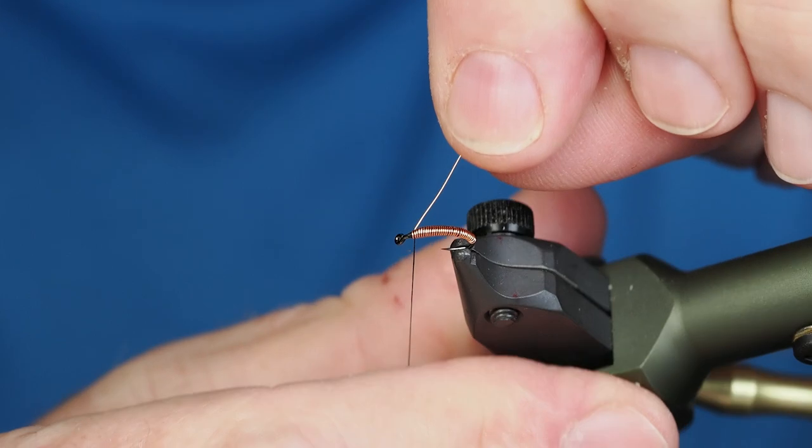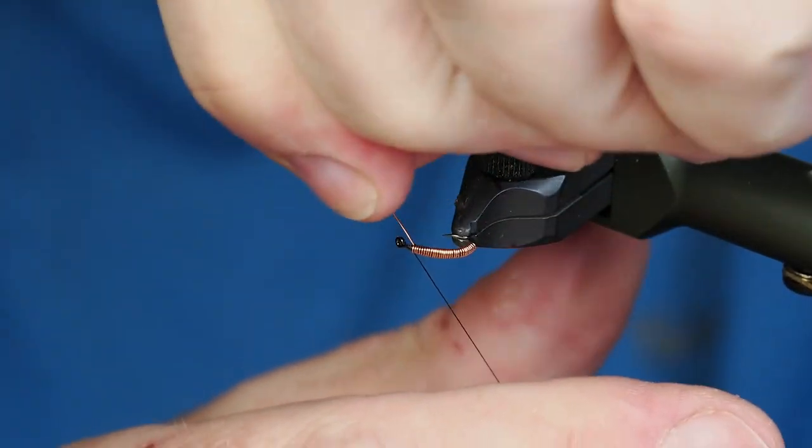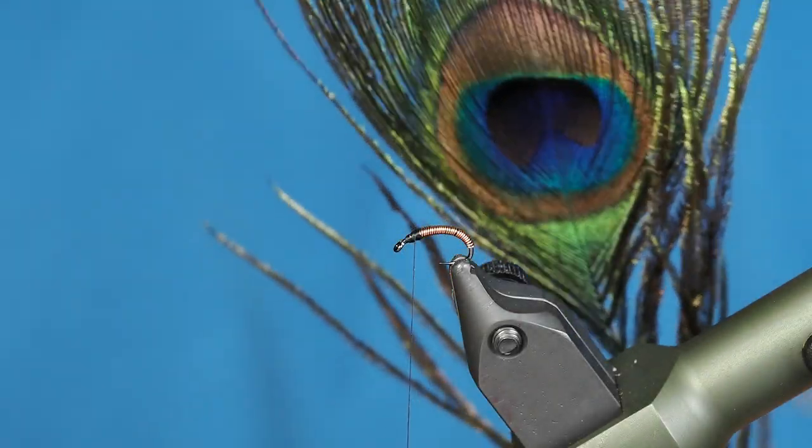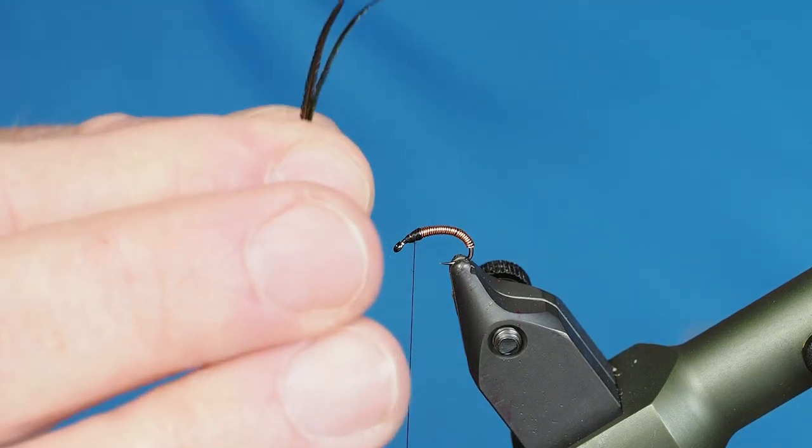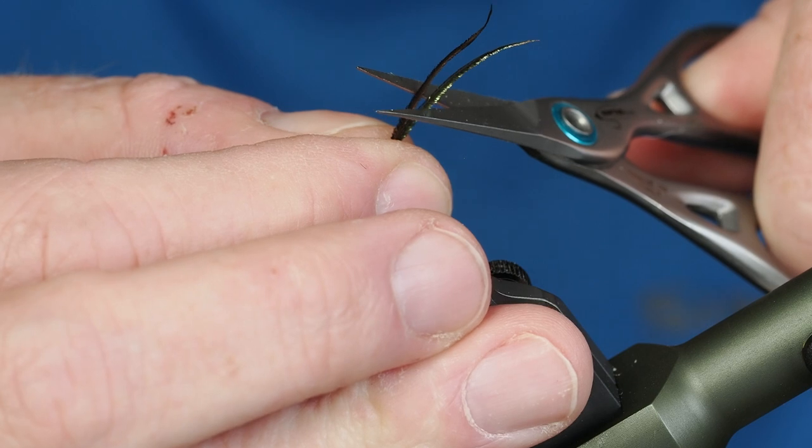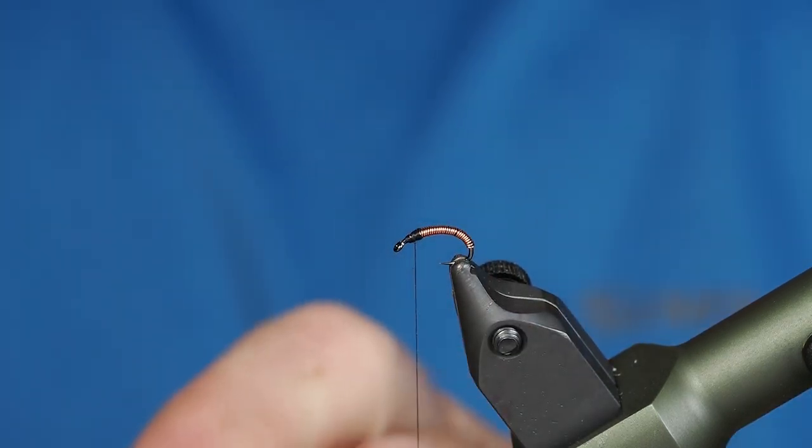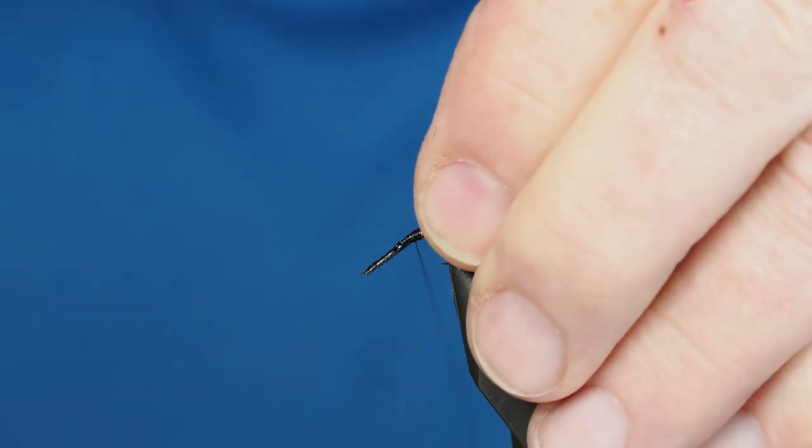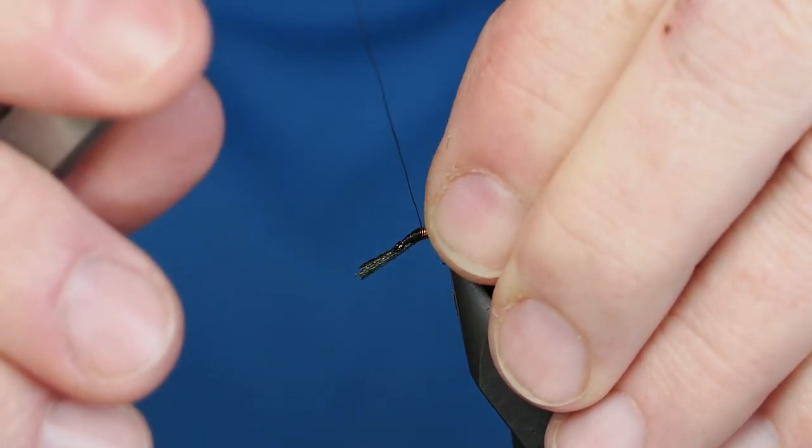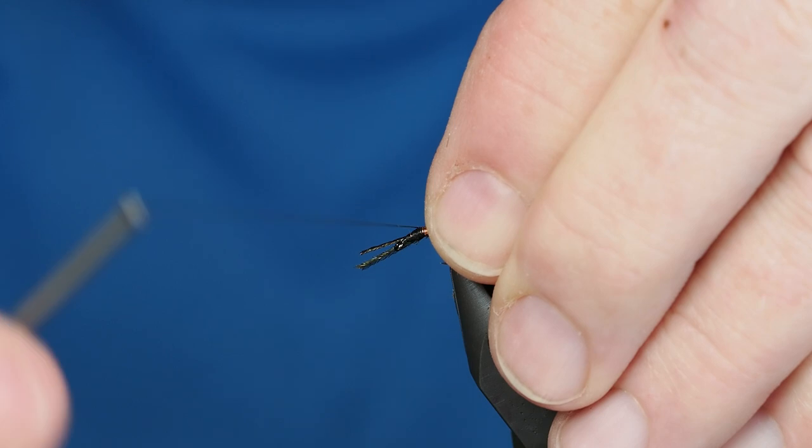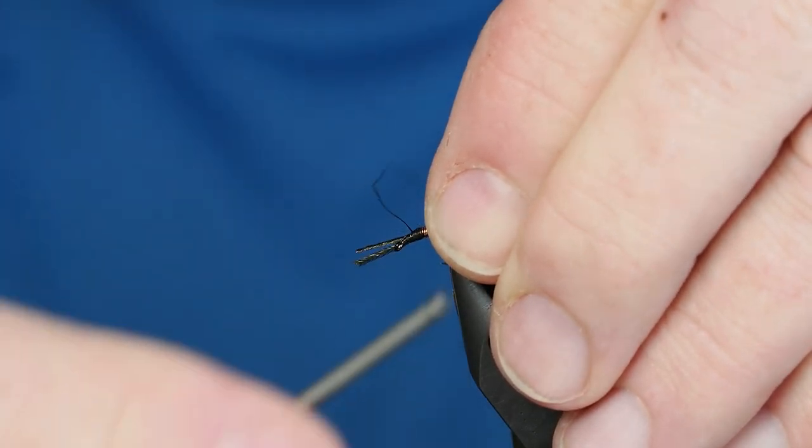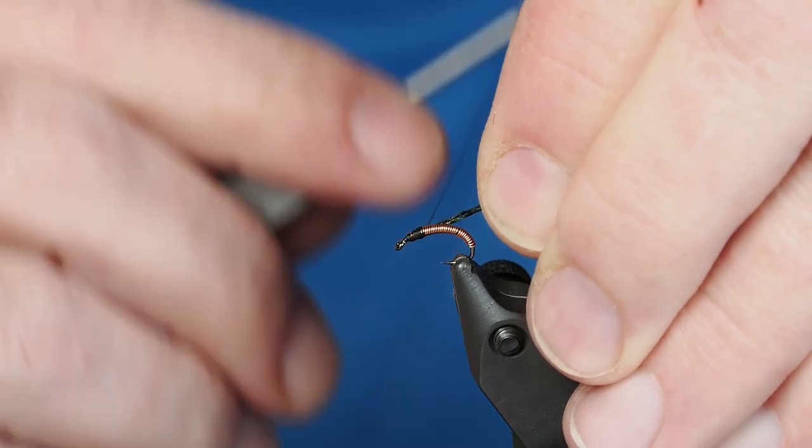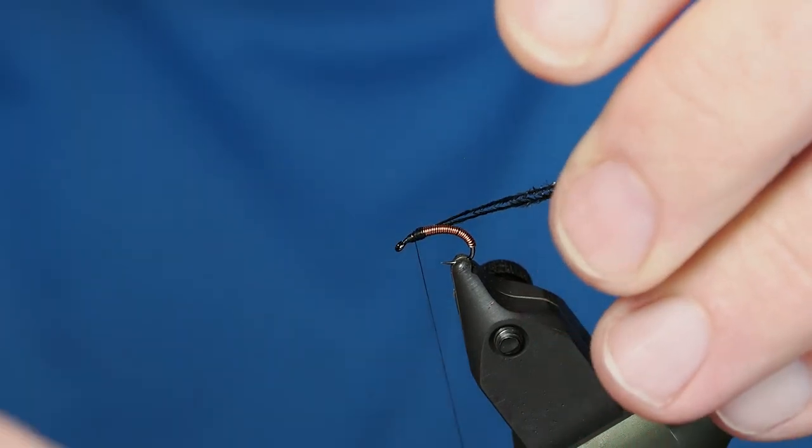Our final material is just going to be a couple of herls from a peacock eye. I've got them right here. I'm gonna cut off the tips of these because that's where it's most brittle, and just to prevent that from breaking off when I'm trying to tie it in. I don't want to take these initial turns to secure this too tight because it'll cut right through peacock herls. I'm going to just draw those back so that they're behind the eye and take another few wraps forward to kind of lock them into position.